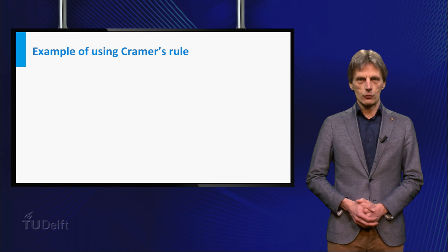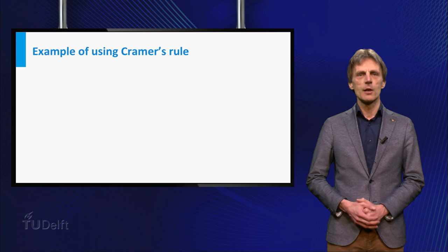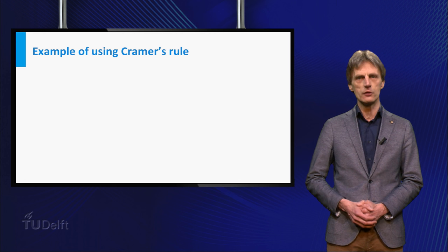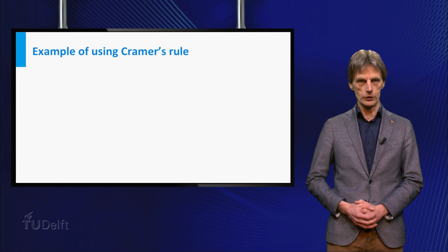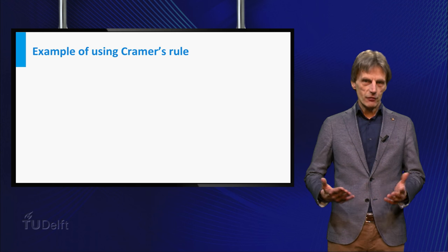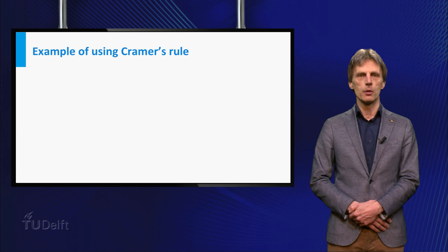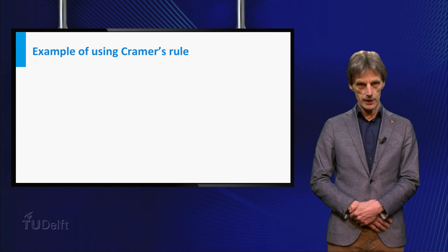The formulas for x1 and x2 given above are an example of the formulas that follow from Cramer's rule for any system of n equations in n variables with a unique solution. Before giving the general result I would like to show you an example of a problem which is easily solved by using Cramer's rule.